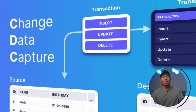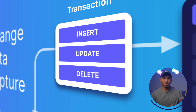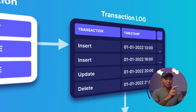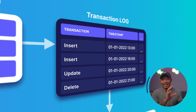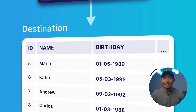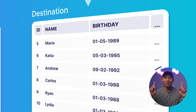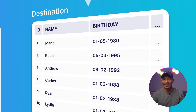So what CDC will allow us to do is only look at the changes on the source database. We saw two inserts and one delete. We capture those changes, send those over to our destination database, and then implement them there to keep these two systems in order, in check, and in sync.